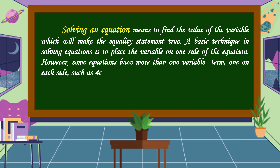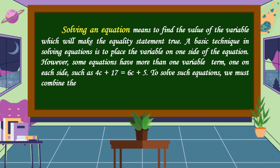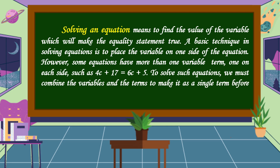Such as 4C plus 17 is equal to 6C plus 5. To solve such equations, we must combine the variables and the terms to make it a single term before we can thoroughly find the value of the variable.